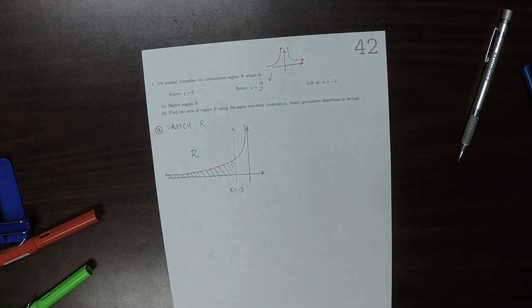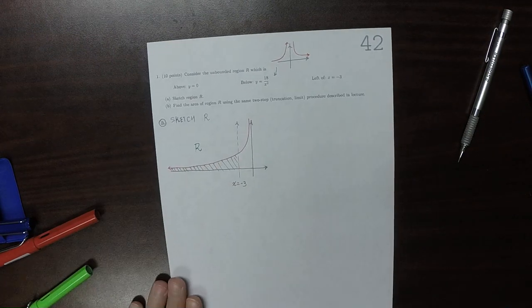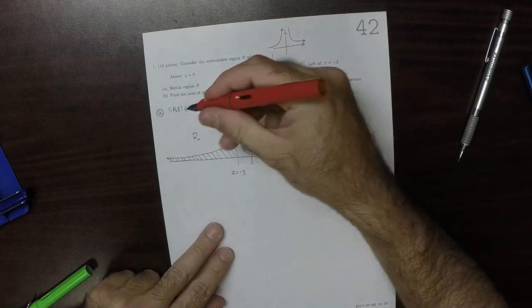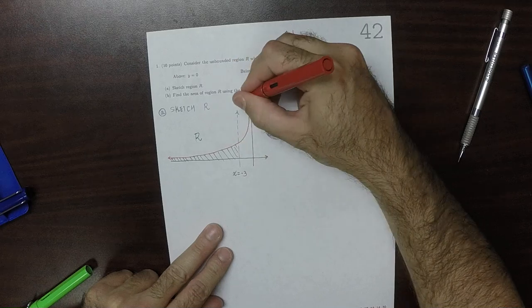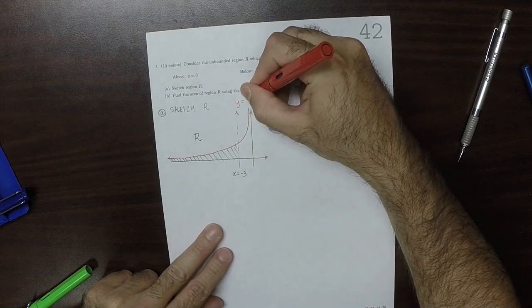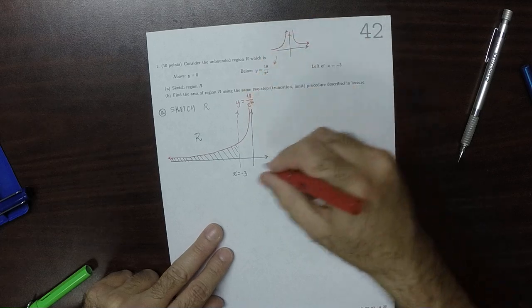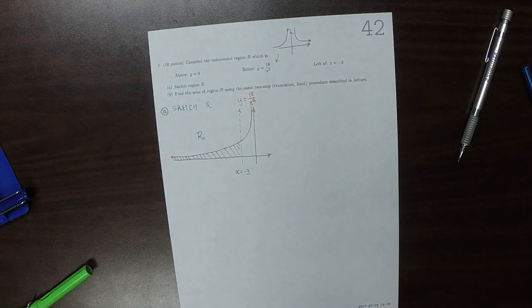So everything to the left of negative 3. So this red is the left side of y is 18 over x squared. And of course, the x-axis is y is 0.